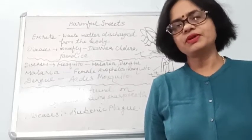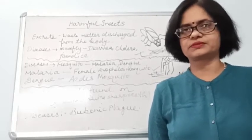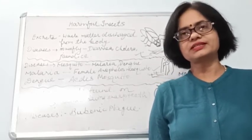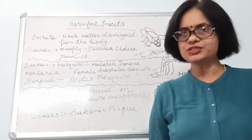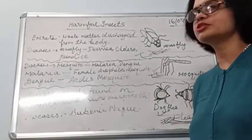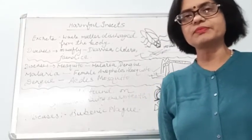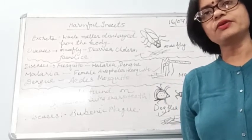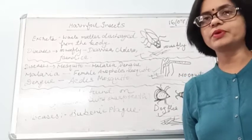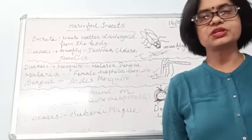Today we are going to learn about some harmful insects which cause harm to us. In this category, we have insects like the housefly, mosquito, and different kinds of fleas. Such insects are very harmful for us because they cause diseases which affect us a lot.